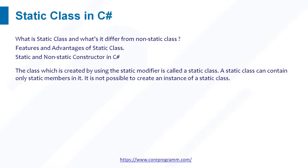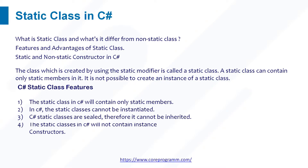Let's understand what is a static class. The class which is created by using the static modifier is called a static class. A static class can contain only static members in it. It is not possible to create an instance of a static class. The features are: a static class in C# will contain only static members.